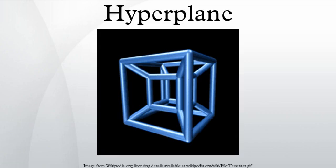In geometry a hyperplane is a subspace of one dimension less than its ambient space. If a space is three-dimensional then its hyperplanes are the two-dimensional planes, while if the space is two-dimensional, its hyperplanes are the one-dimensional lines.